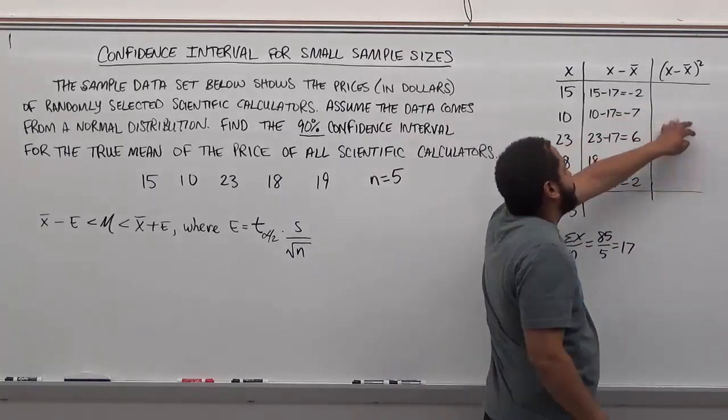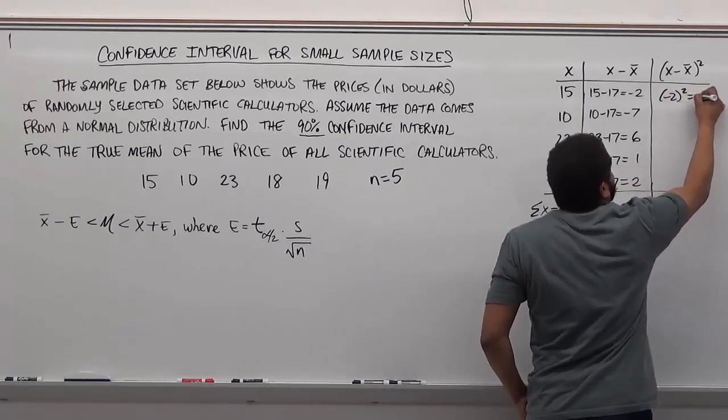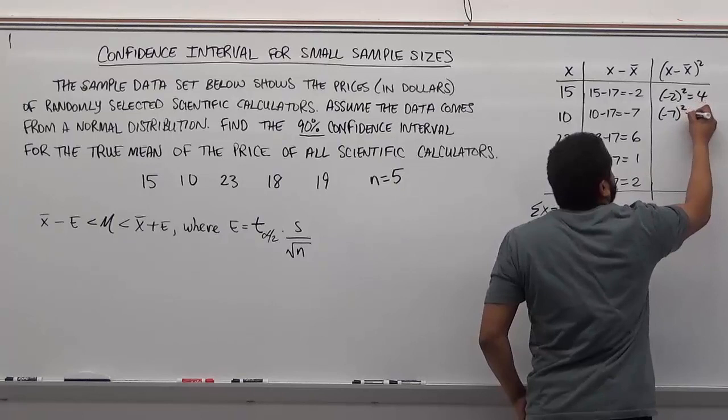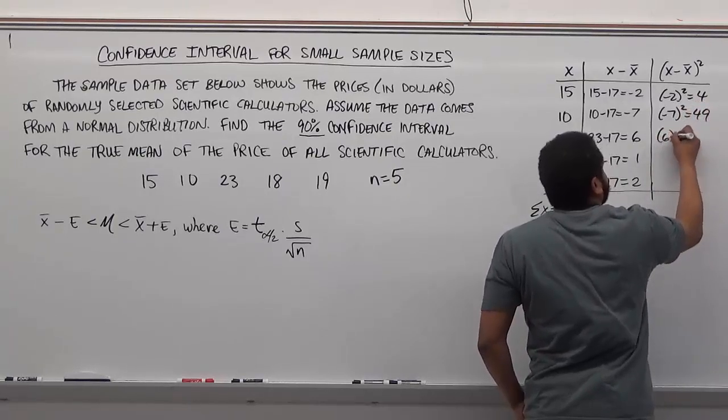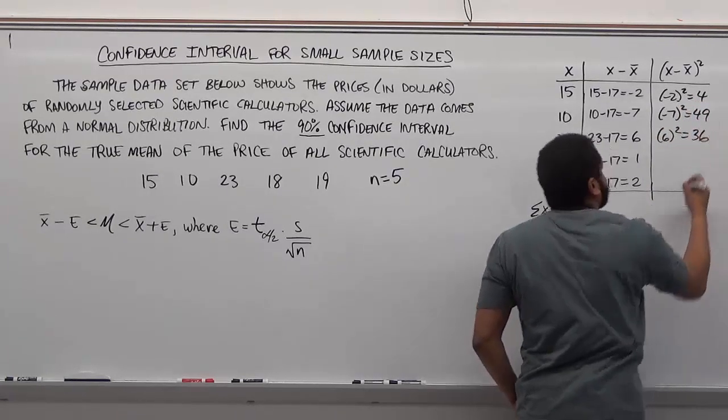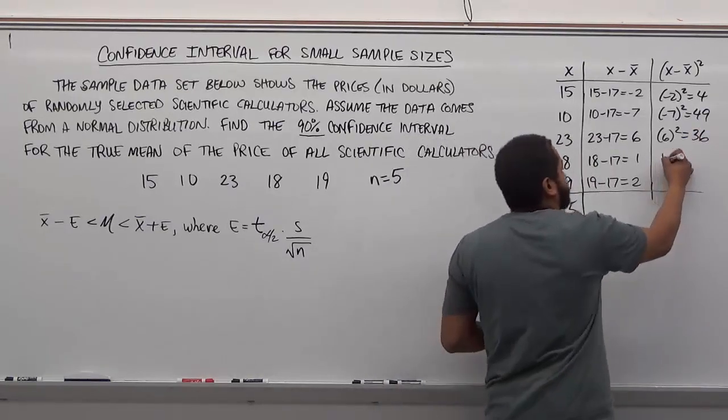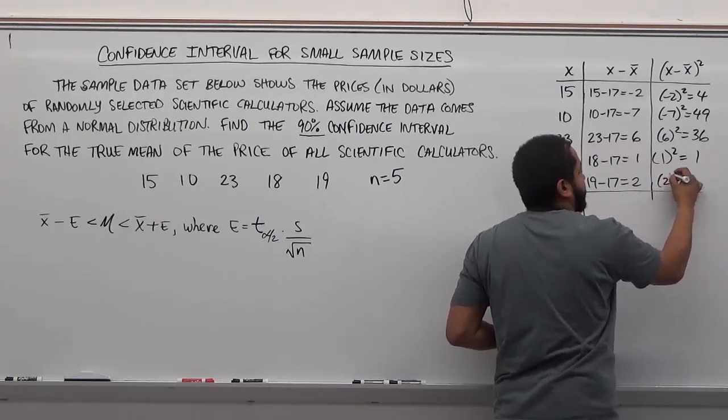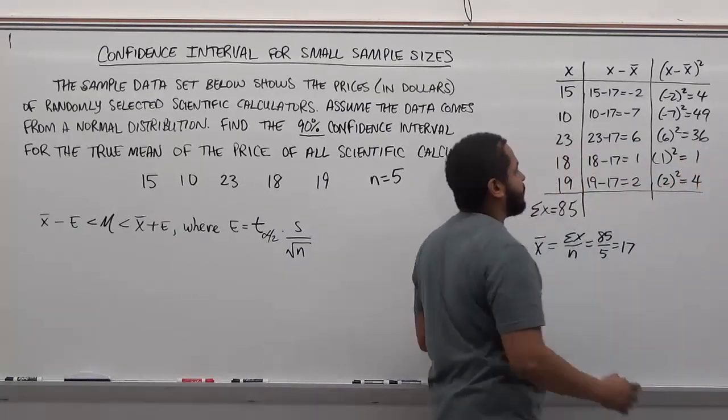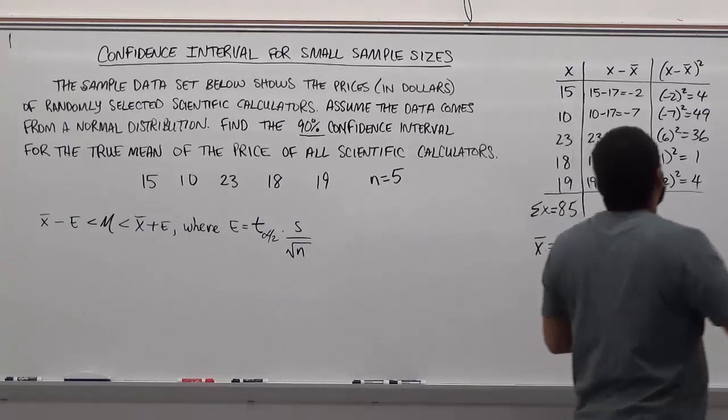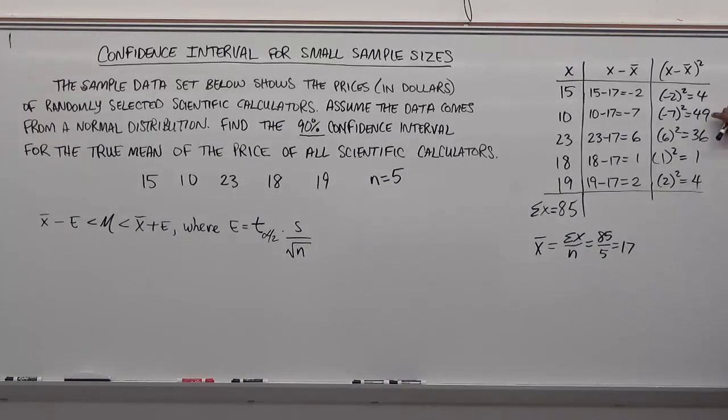Now we're taking these values and we're squaring them. So negative 2 squared is just 4. Negative 7 squared is 49. 6 squared is 36. 1 squared is just 1. And 2 squared again is 4. Now we're adding these up and this is a quite easy add because we have 36 and 4, that makes 40. 49 and 1, that makes 50. 50 plus 40 is 90. And 90 plus 4 is 94. Use a calculator to do this. You don't have to be perfect, you have to use your calculator though. So the sum here is 94.